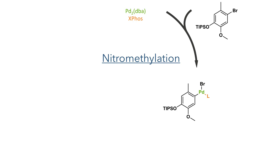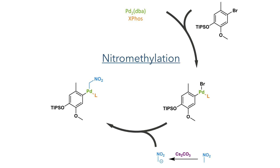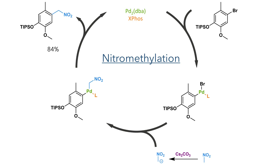This compound was then taken forward to a nitromethylation reaction. Palladium first undergoes oxidative insertion into the carbon-bromine bond. This complex then reacts with a nitromethane anion formed by the deprotonation of nitromethane by cesium carbonate. Reductive elimination of the resulting palladium species forms a new carbon-carbon bond, completing the synthesis of the Michael donor in an 84% yield.